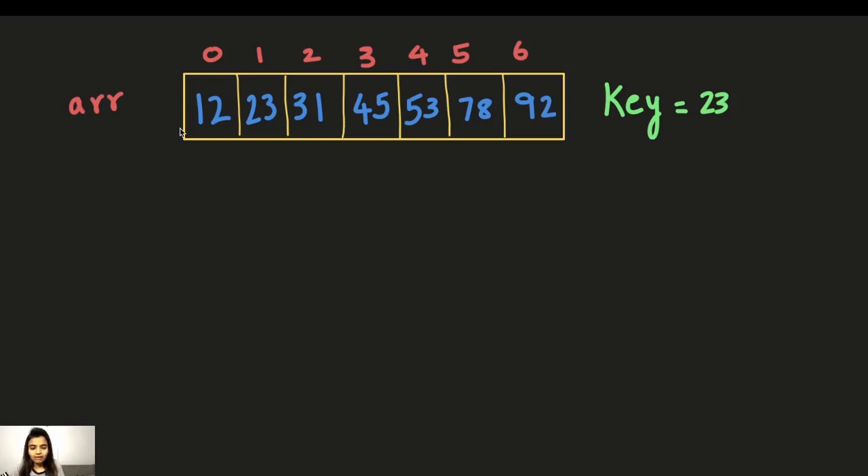So now we have an array here which has seven elements. The indices are 0 to 6 of each of these elements. The array is called arr and we have a key which is 23. What we're going to do is find the middle element, compare it with the key, and if both of them match, that means we have found our key.